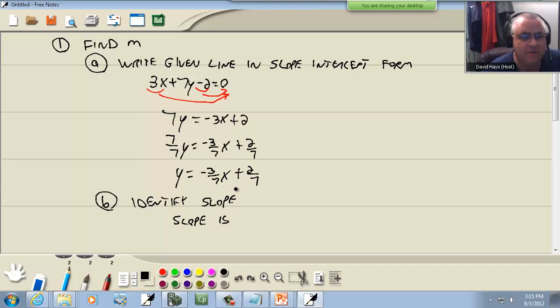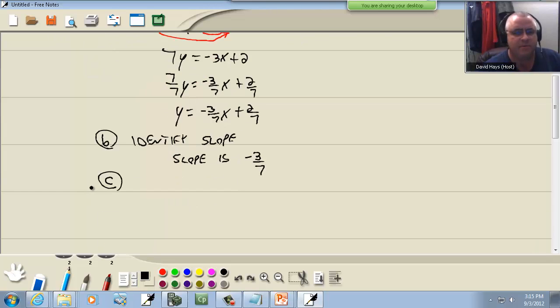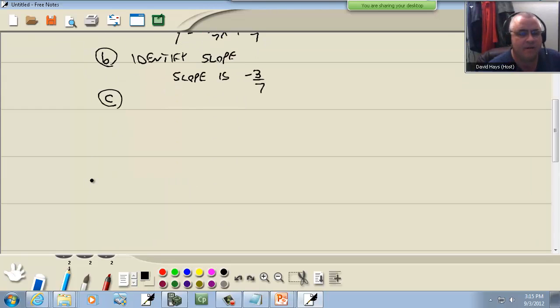Then what we do is perpendicular lines have slopes that are negative reciprocals.